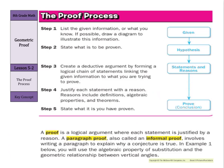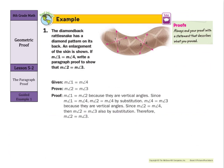We're going to be practicing this in a couple of different ways today. A proof is a logical argument where each statement is justified by a reason. A paragraph proof, also called an informal proof, involves writing a paragraph to explain why a conjecture is true. In example one, you will use the algebraic property of substitution and the geometric relationship between vertical angles. The diamondback rattlesnake has a diamond pattern on its back — an enlargement of the skin is shown. If the measure of angle one is equal to the measure of angle four, write a paragraph proof to show that the measure of angle two is equal to the measure of angle three.